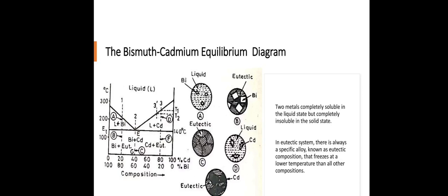Here we are going to see bismuth-cadmium equilibrium diagram. In this picture, we can see different phases creating different structures having different forms when we vary the percentages by heating. Two metals completely soluble in the liquid state but completely insoluble in the solid state.